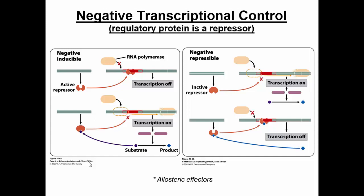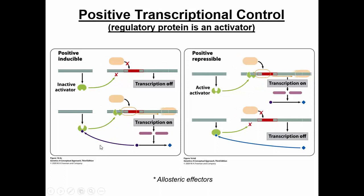Now look at the positive control pictures. When the regulator protein is bound and transcription is on, that's why it's positive. The first picture goes from off to on, so it's inducible positive control. In the second picture, when the regulator protein is bound, transcription is on — so it's positive. And it goes from on to off, so it's repressible positive control.